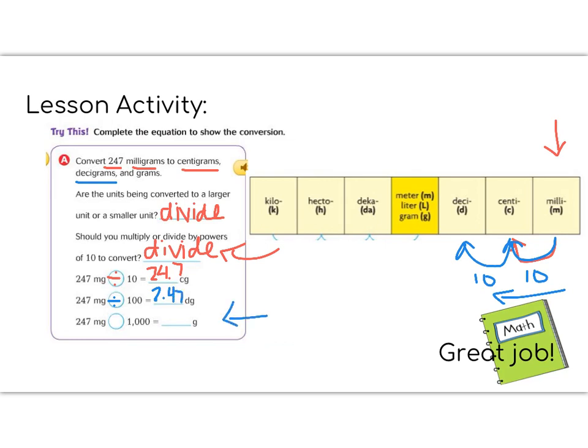Your job is to fill in how many grams it would be. In order to get grams, you would do one, two, three steps, which means you would have one, two, three tens, which means you would divide by 1,000 and your decimal would move one more place to the left. Fill in that answer and we'll talk about it at the teacher table. Great job, fifth graders.